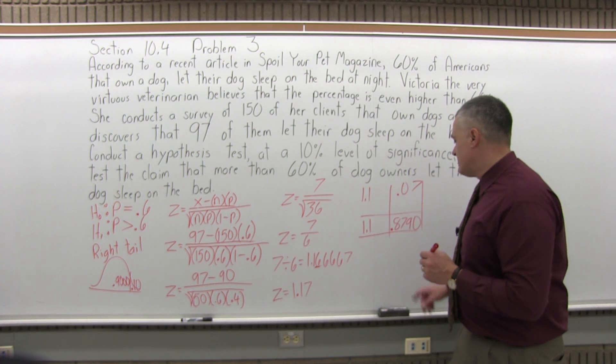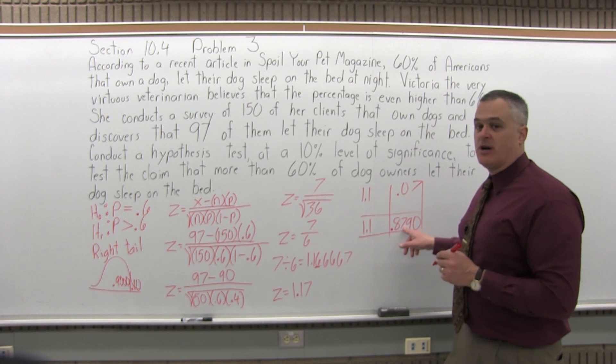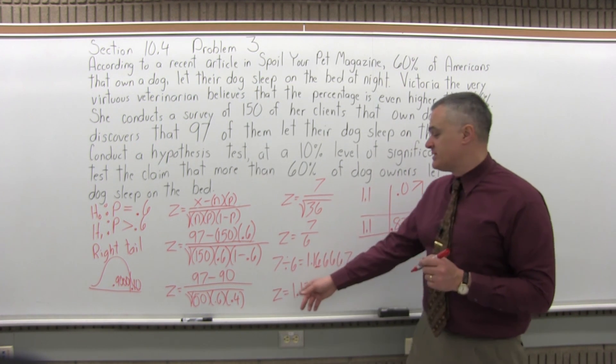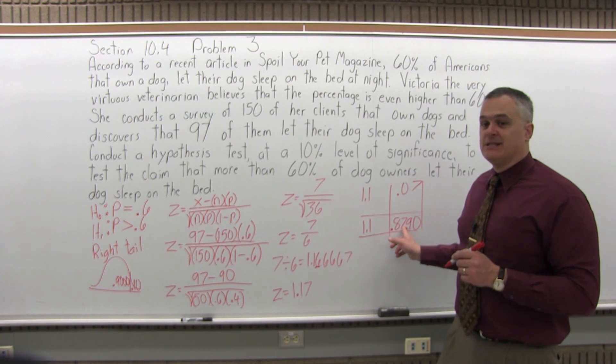That's our result from the chart. That's step 5. Step 5 says look up z in the chart. We looked it up and we got 0.8790.